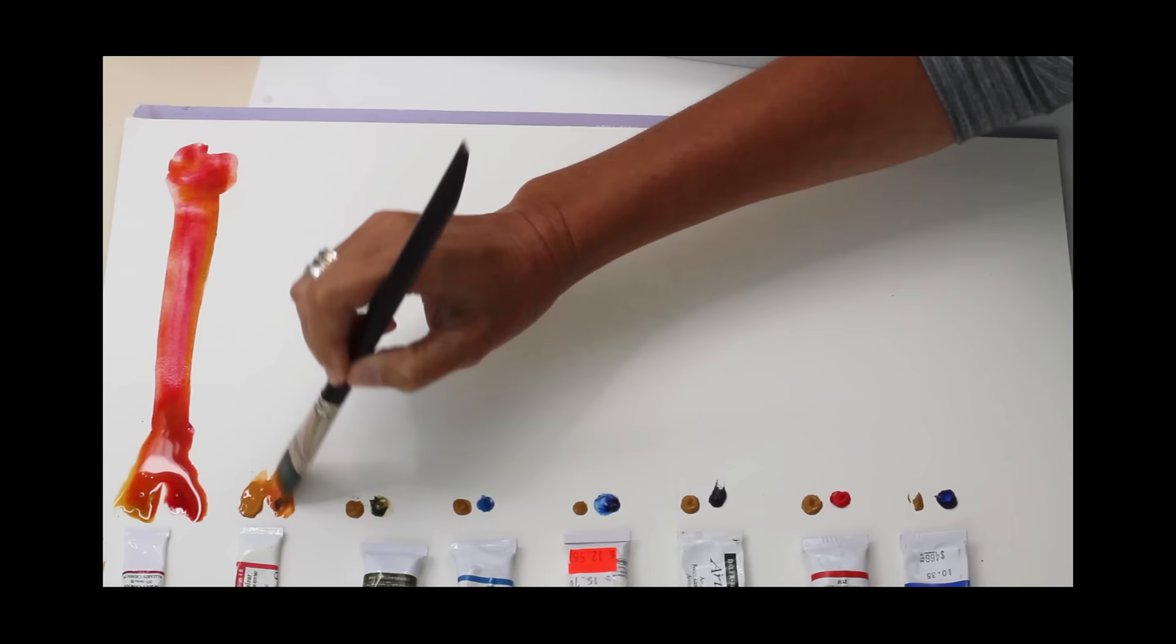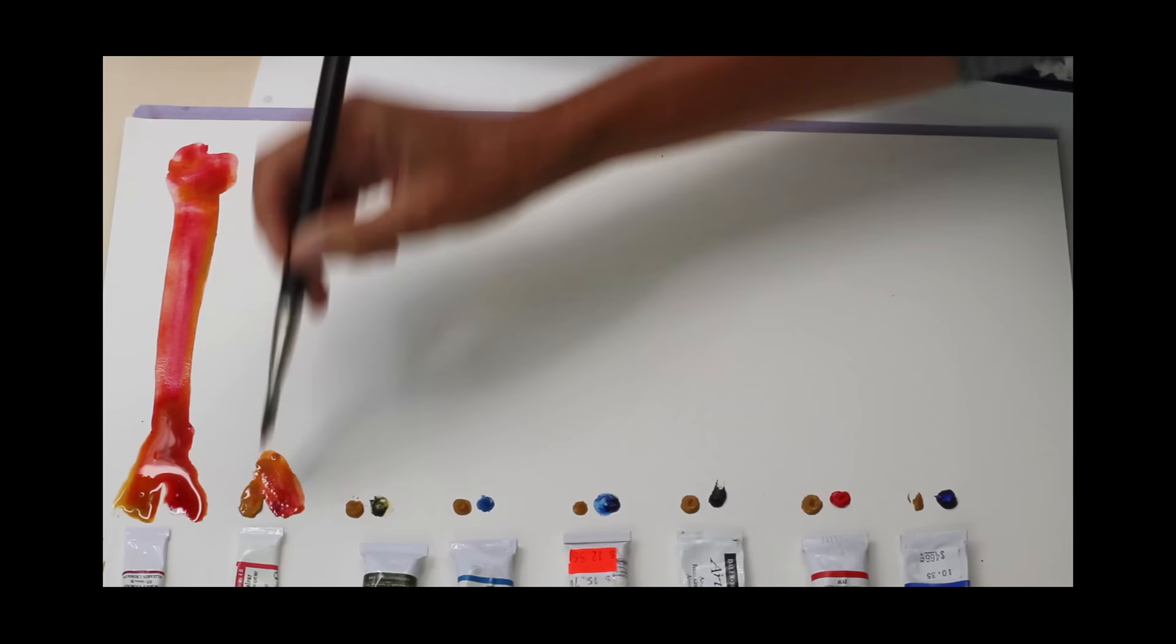So when you dip your brush in yellow ochre, you're using the same pigments that were used in prehistoric times. It is likely the oldest art supply on the planet.